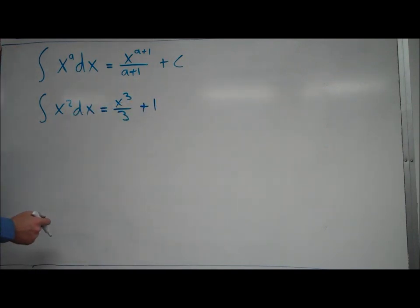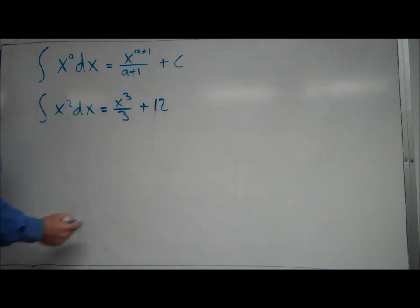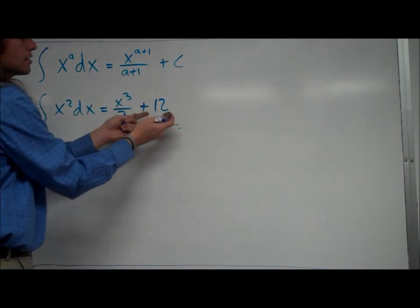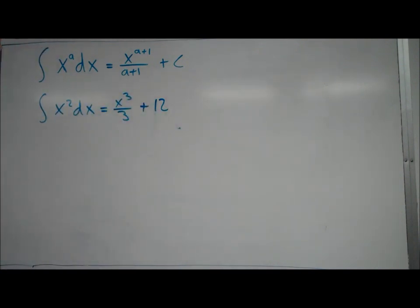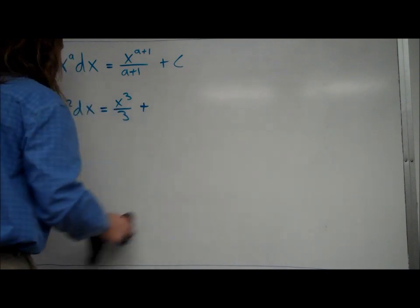The reason is because when you take the derivative of 1, it would just become 0. And so would this right here, x cubed over 3 plus 12. If you take the derivative of that, it becomes x squared. So essentially, any constant you place there, when you take the derivative, it will be 0. So therefore, in order to take that into account, we put this plus c.